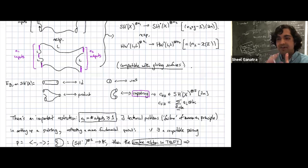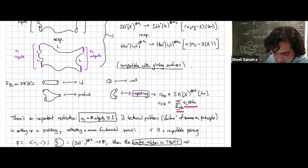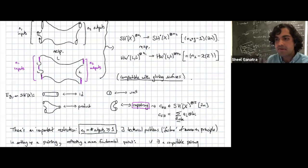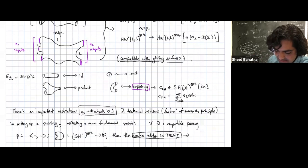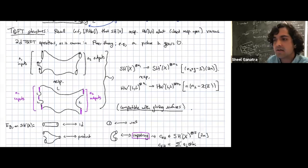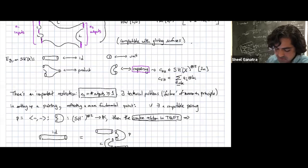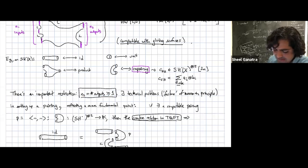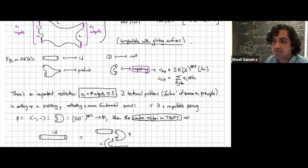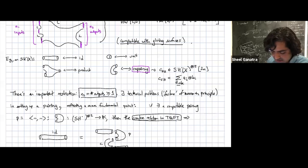This co-pairing is a finite element of the form sum of a_i tensor b_i. In the non-compact setting, not all such operations appear in practice. Looking at Ritter's paper, the number of outputs for any such operation must be greater than or equal to one. There are technical problems — experts see this as a failure of the maximum principle — but these technical problems reflect a more fundamental point: if there existed a compatible pairing, a standard relation in topological field theory would imply quite a bit that we know not to be true.